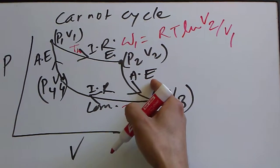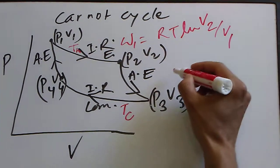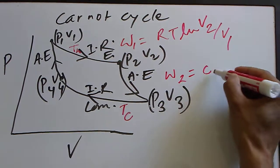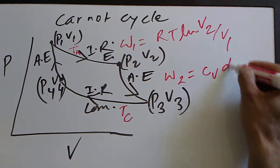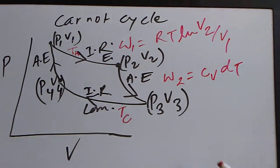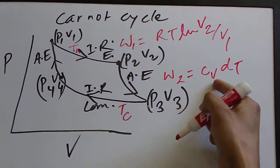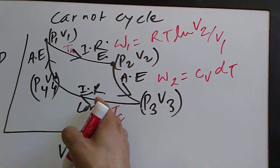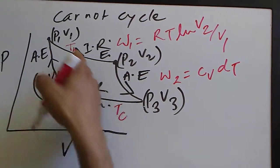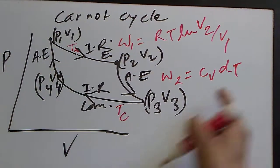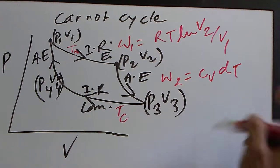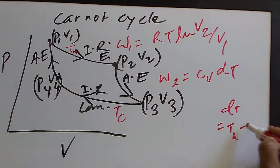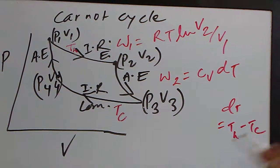In the adiabatic expansion, the work done — let's call it W2 — equals Cv·DT, where DT is the high temperature minus the low temperature, i.e., DT = TH − TC.